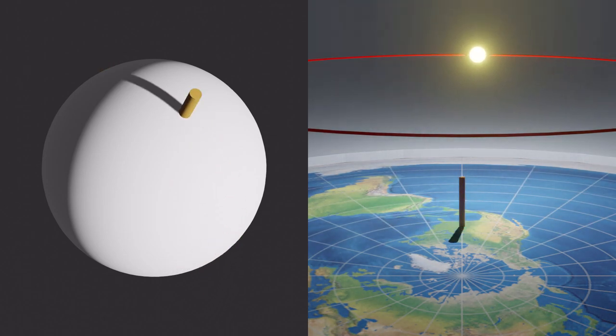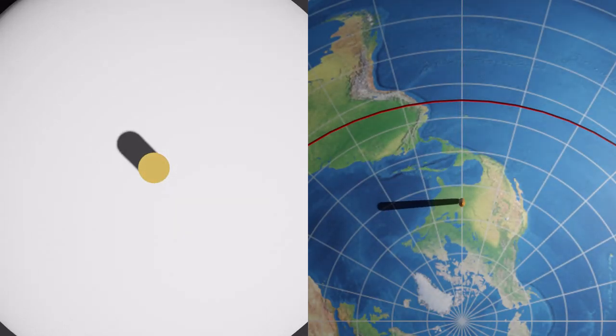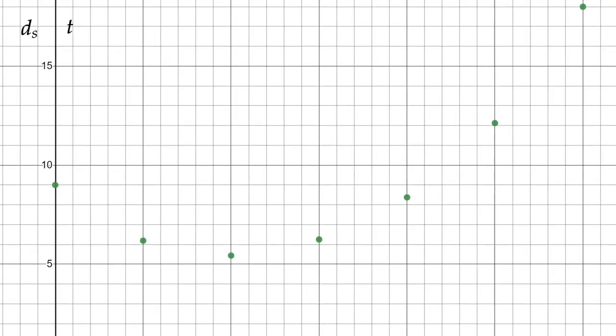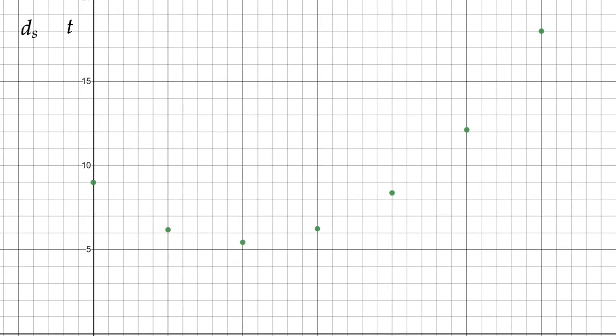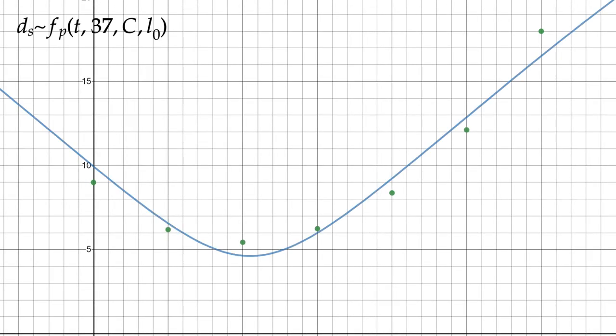Now that we have predictions of shadow lengths in both models, let's take actual measurements of what shadow lengths were observed. I'll represent the shadows that were observed as a list ds and their times as a list of t. Let's first start by plotting the data points ds over t. Now that we have an idea of the type of curve we would expect, we can start by graphing fp as ds approximates fp of t, 37, c, and L0.